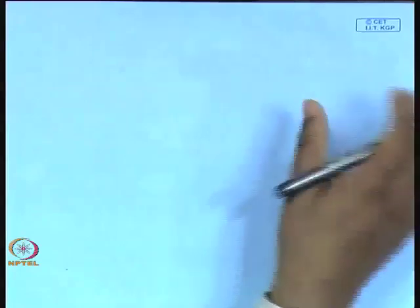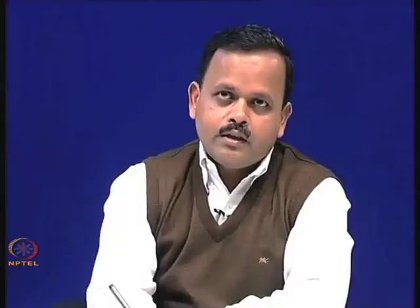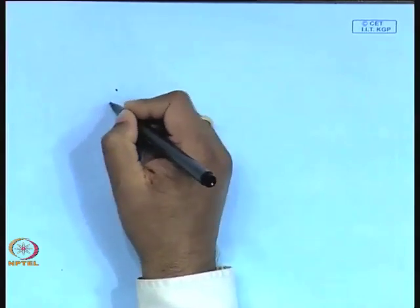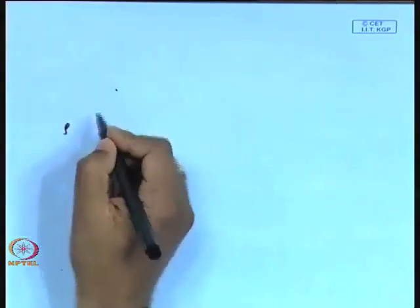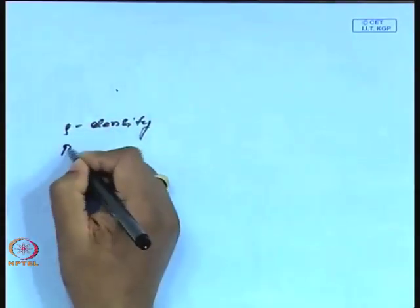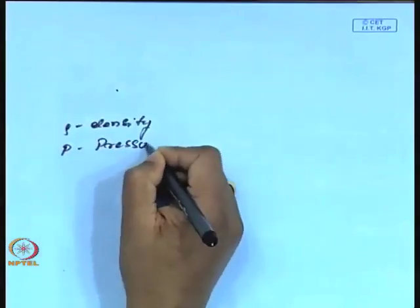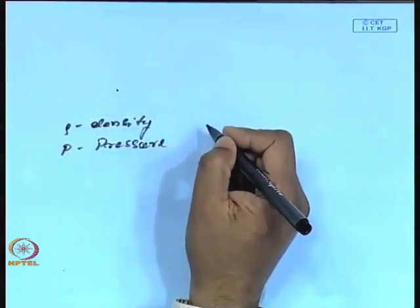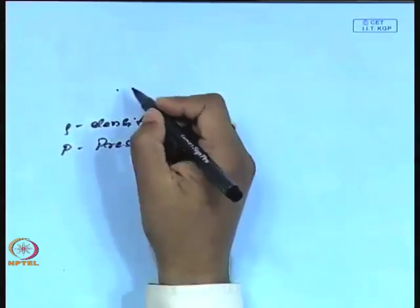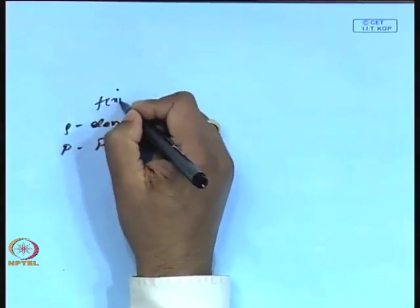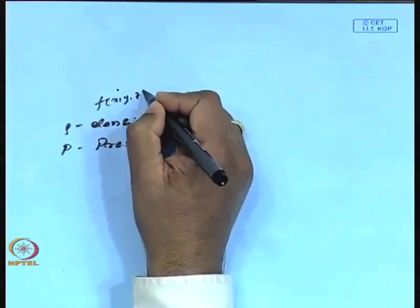Suppose I have a scalar function. When I look at a scalar function in the fluid, I will consider density or fluid pressure, which are functions of x, y, z and t, because they all depend on space as well as time. Suppose I take a point p and the function f, which is a function of x, y, z at time t.